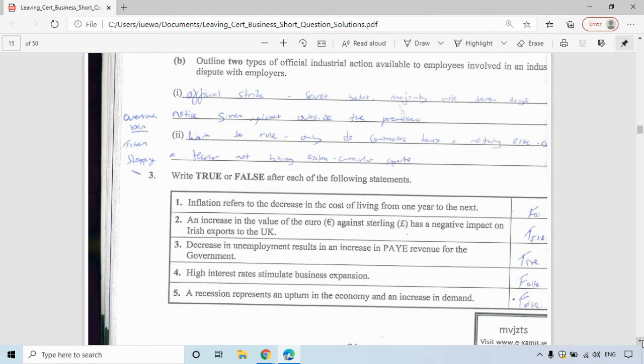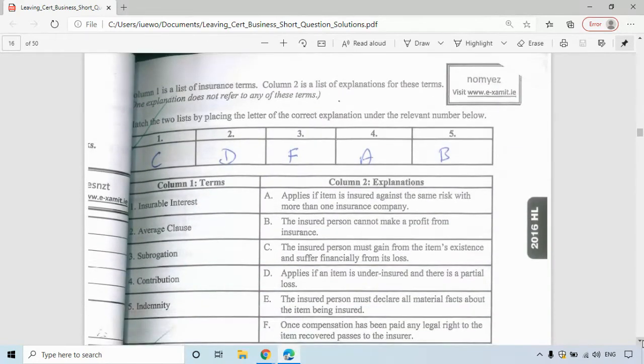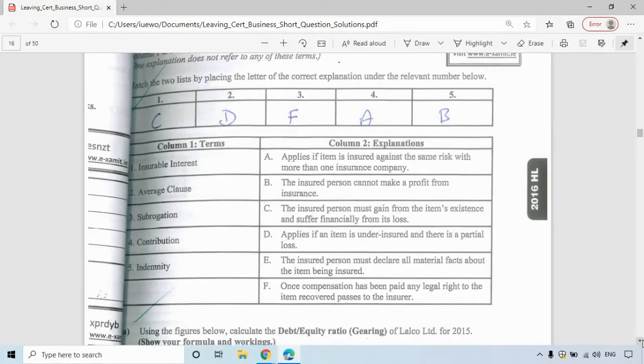The next question is an insurance question from unit four. You have to match the terms to the explanations. Insurable interest: you have to benefit or gain from an existence and suffer from a loss, so that's C. Average clause is D: if you underinsure something and there's a partial loss, they only get a percentage of the value of compensation if you don't insure something fully.